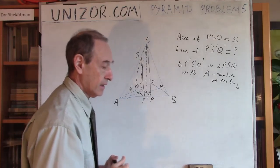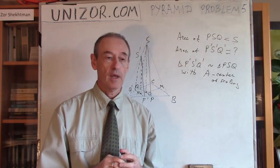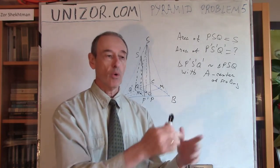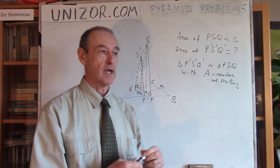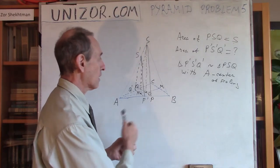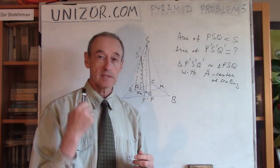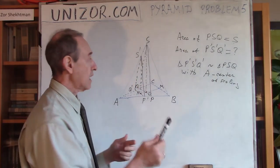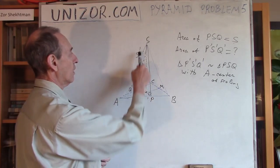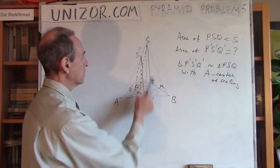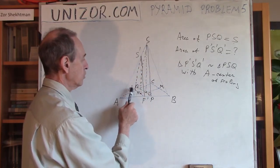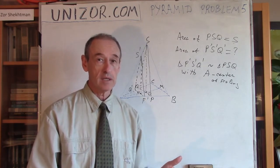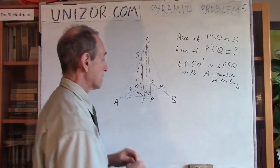Now, next thing is to remember that, well, in two-dimensional world, scaling increases or decreases all the lengths by the same factor. And in three-dimensional case, we can talk about areas. Now, areas are always increasing or decreasing in the square of the factor. So if we know the factor of this scaling, then we can definitely say that the area of PSQ and P prime S prime Q prime are related as a square of the factor. So the only question remaining is, what's the factor?